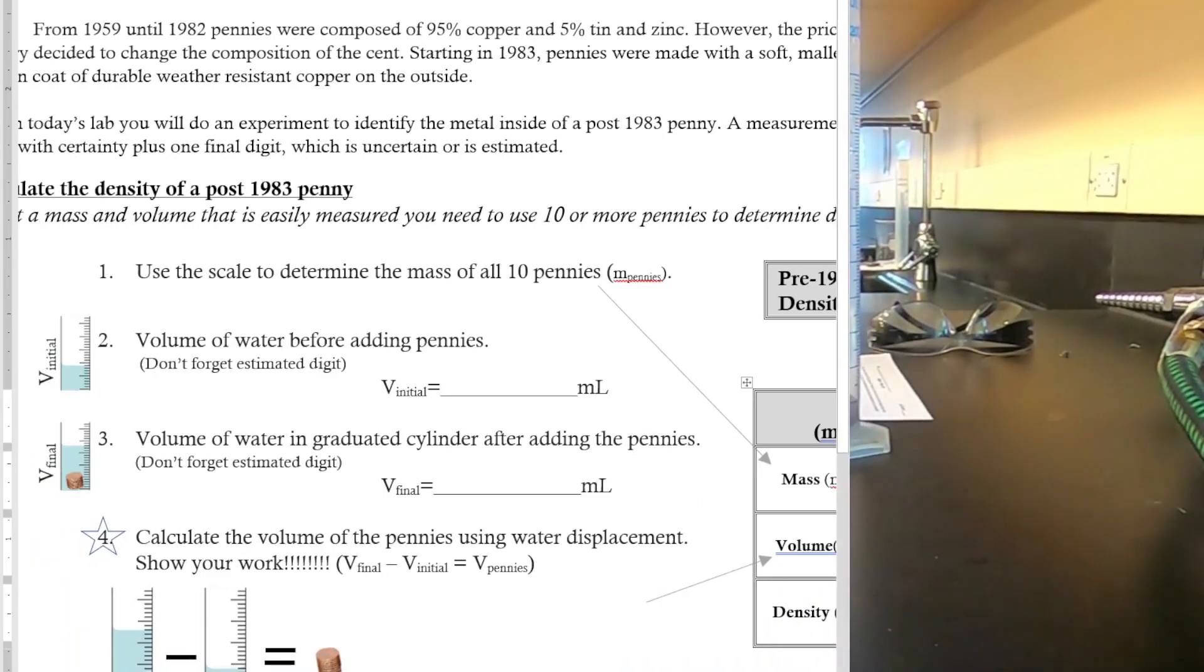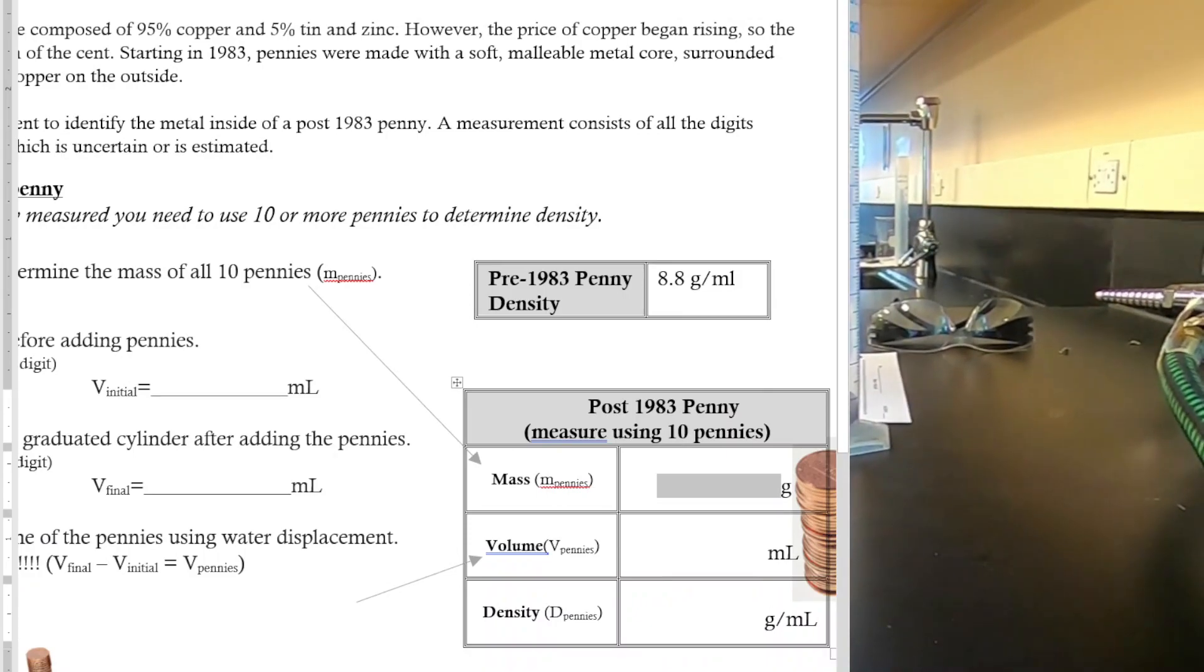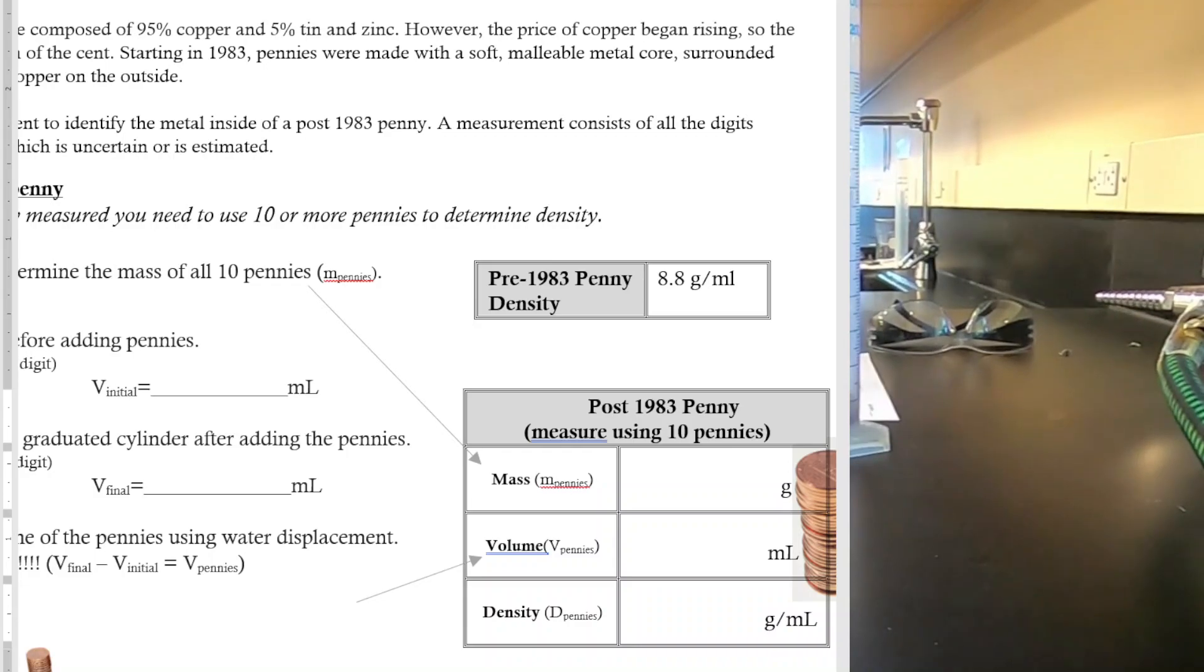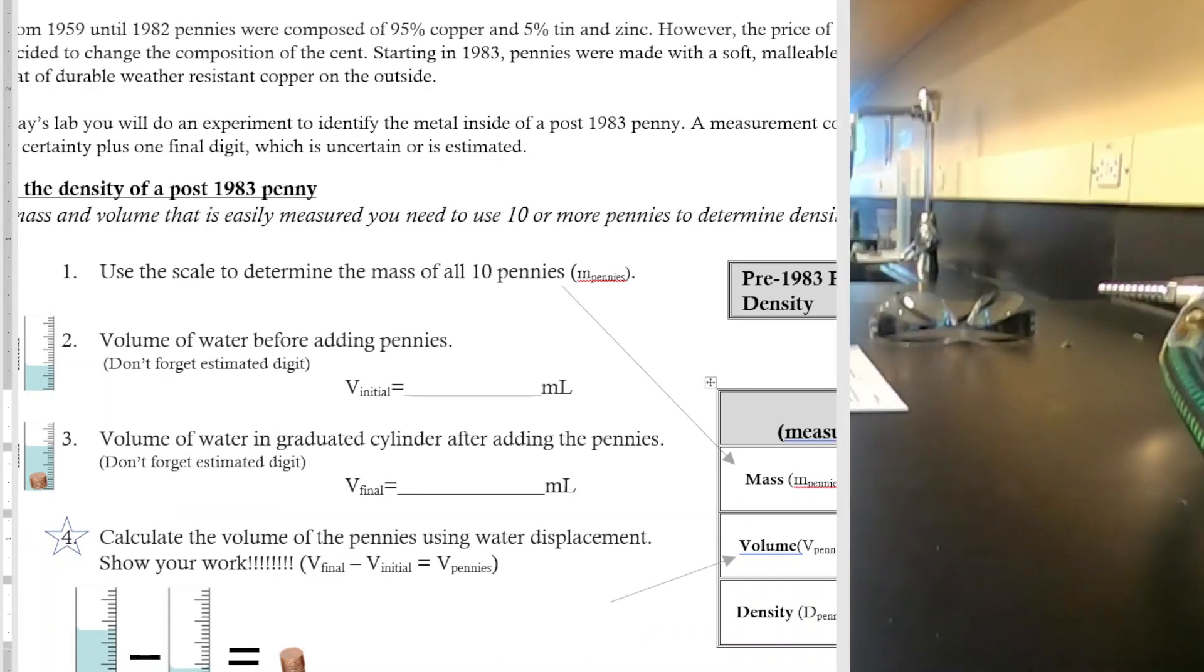Step one says use the scale to determine the mass of all 10 pennies. The mass that we got for our 10 pennies was 25.10. Any students who did this in class might have gotten a slightly different mass, but 25.10 should be your mass there.